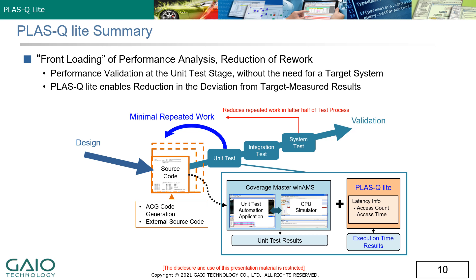The need for increased processing power or other countermeasures can be clarified early on in the design and implementation process, minimizing the rework required if there is a need to redesign the software to meet new processing loads.